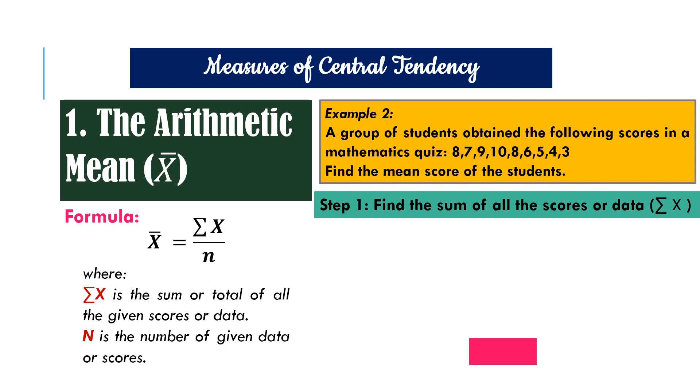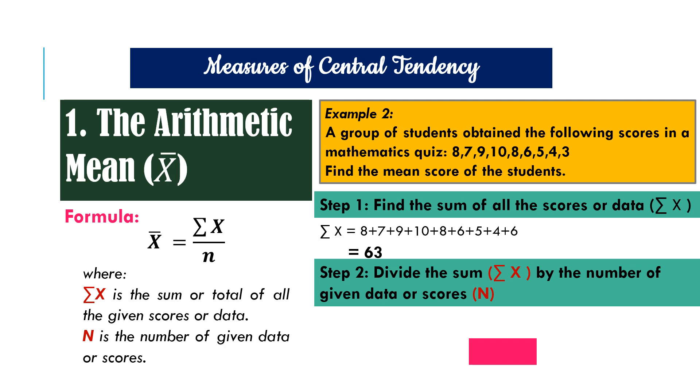We again follow the steps. For step one, we find the sum of all the scores. So 8 plus 7 plus 9 plus 10 plus 8 plus 6 plus 5 plus 4 plus 6 is equal to 63. For step two, we divide it by n. n or the total number of scores in our data is 9. There are 9 students. So when we divide 63 divided by 9, the result is 7. It means that 7 is the average score of the students.